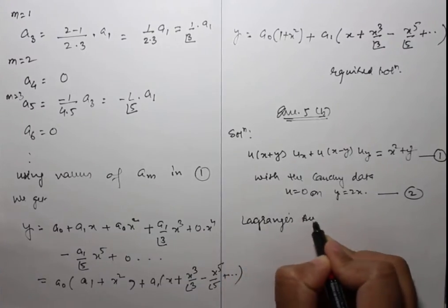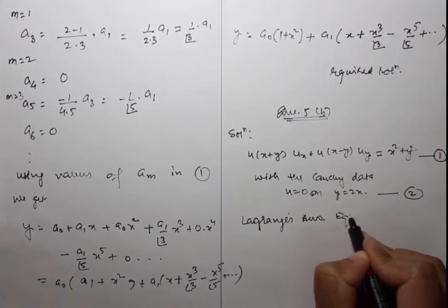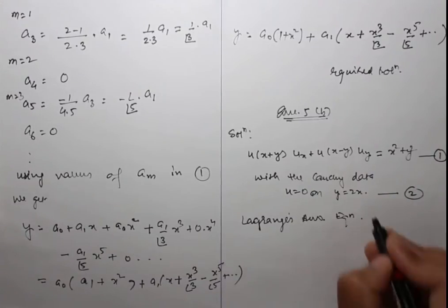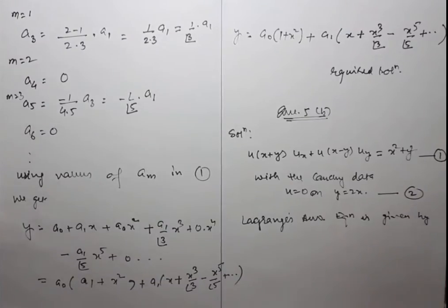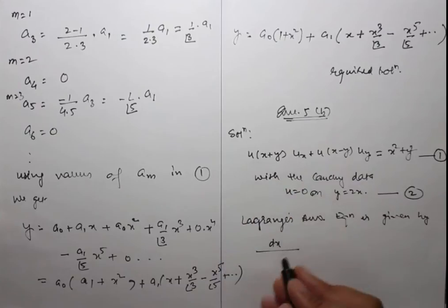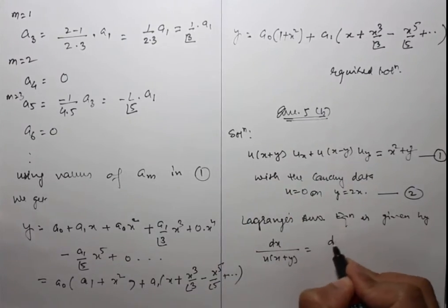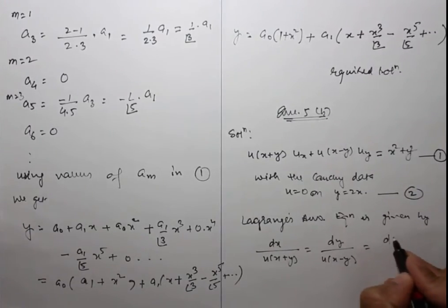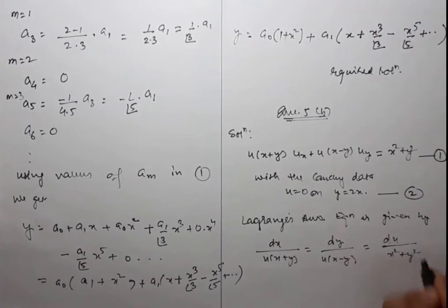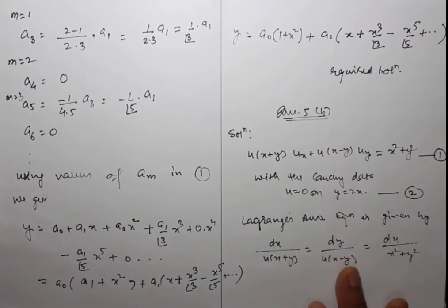The Lagrange auxiliary (characteristic) equation is: dx/(u+x+y) = dy/(u+x-y) = du/(x²+y²). We need to solve this equation and then use the initial data to find the particular solution.